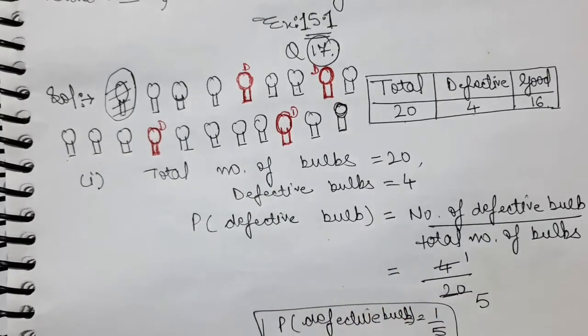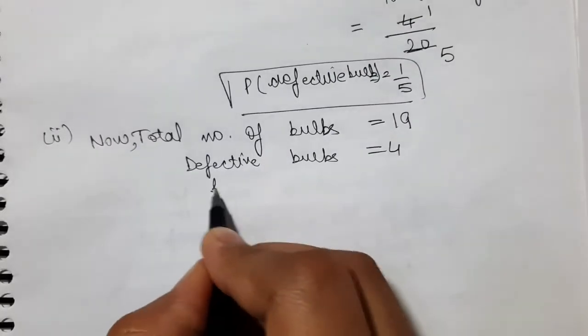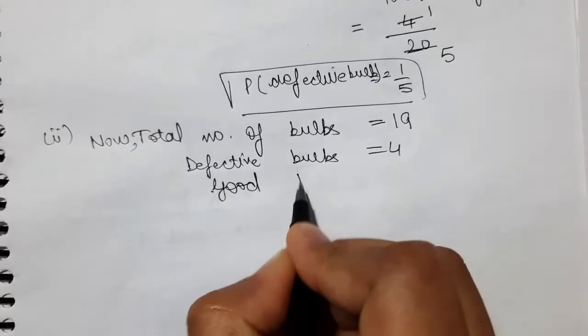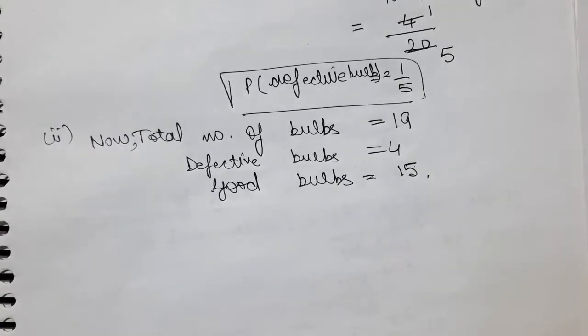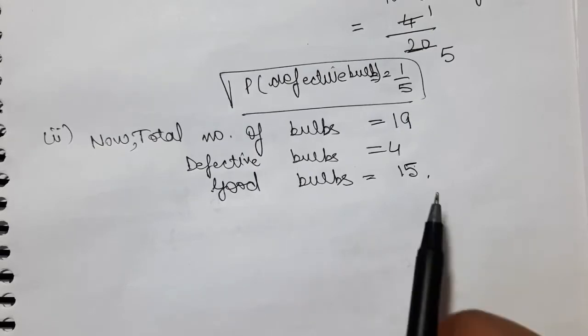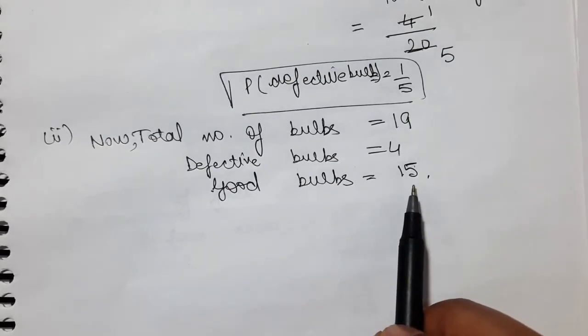Defectives waalon ko nikaal kar, okay, defectives waale ye 4 hi hain. Then yaha par hum likhenge good bulbs is equal to 15 now. Pehle 16 thay, to ek good bulb hamara draw ho gaya, woh bik gaya shopkeeper ka. To phir uske paas good bulbs kitne bache? 15.